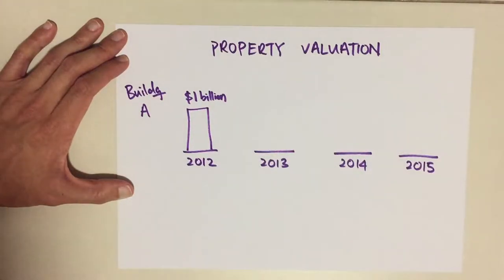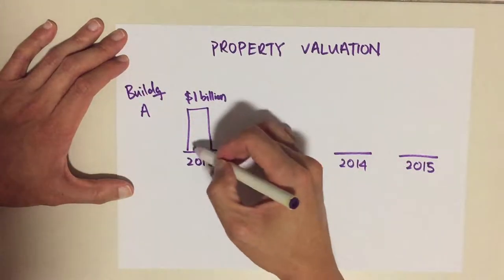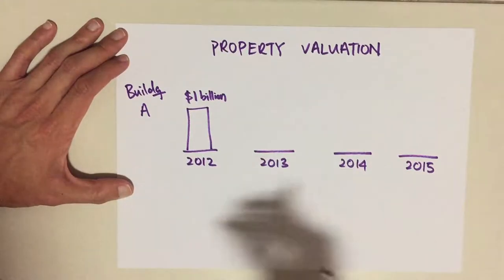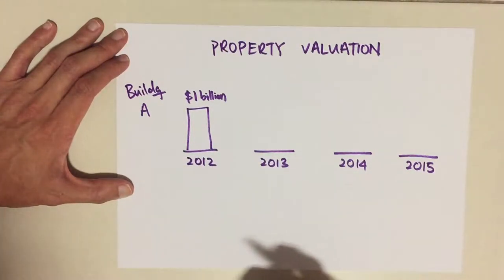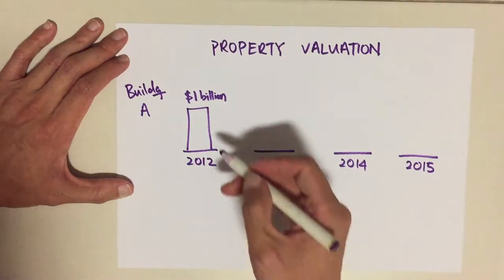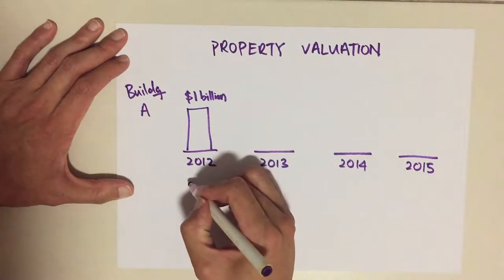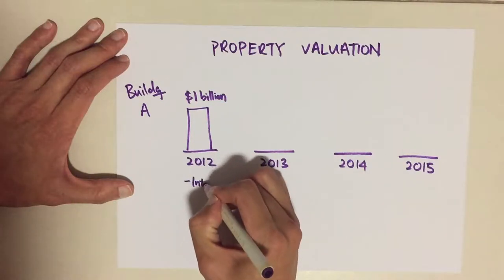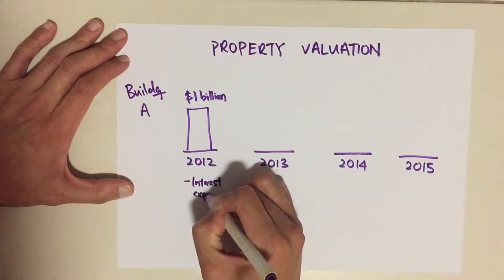At the point of time when you wanted to purchase this building, you definitely have to take on borrowings to fund this purchase. So there will be this interest expense being incurred.